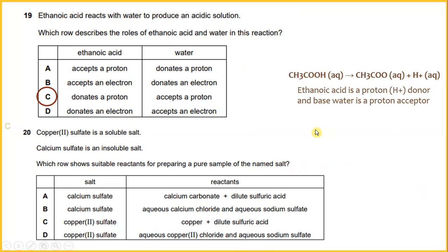Copper(II) sulfate is a soluble salt. Calcium sulfate is an insoluble salt. There are two elements here, one is copper and the other one is calcium. Which row shows suitable reactants for preparing a pure sample of the named salt? The answer given here is calcium sulfate is the salt and the reactant is aqueous calcium chloride and aqueous sodium sulfate. This is the reactant.